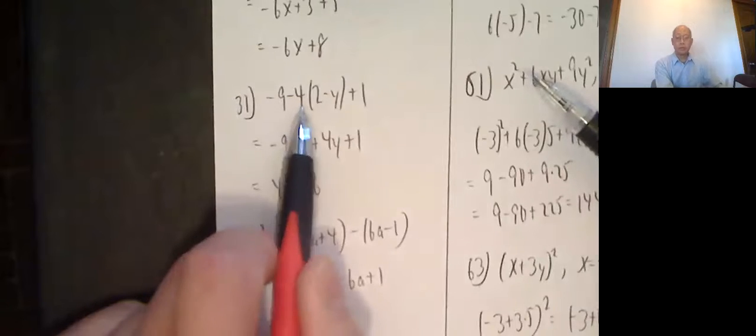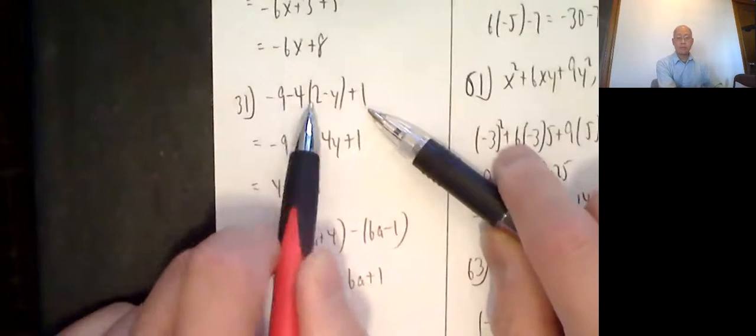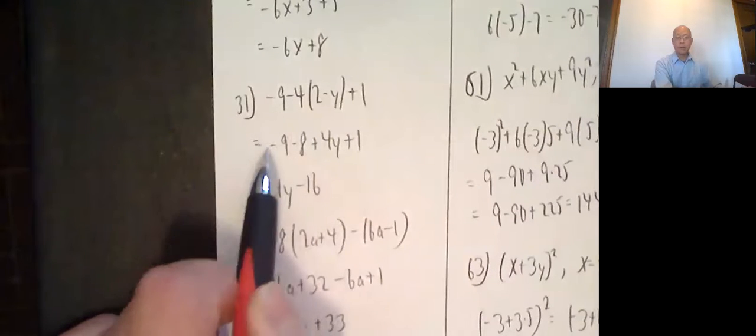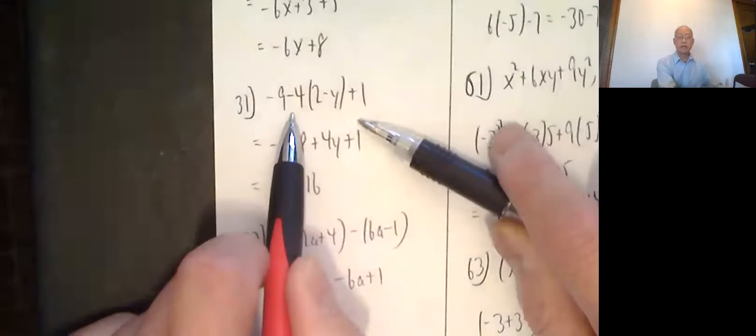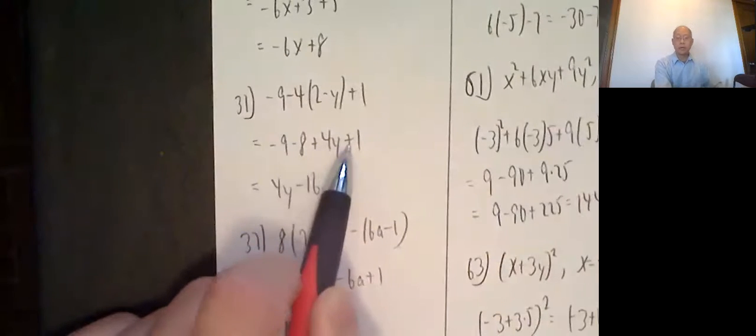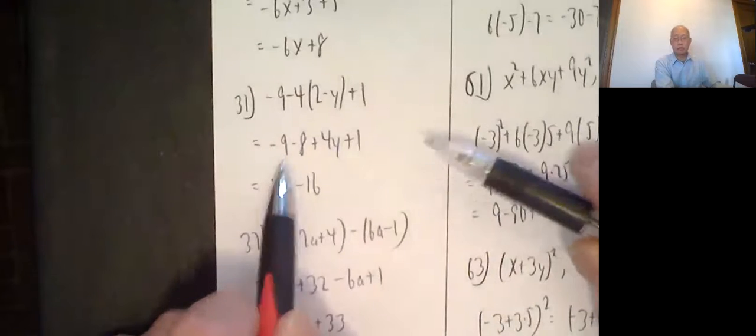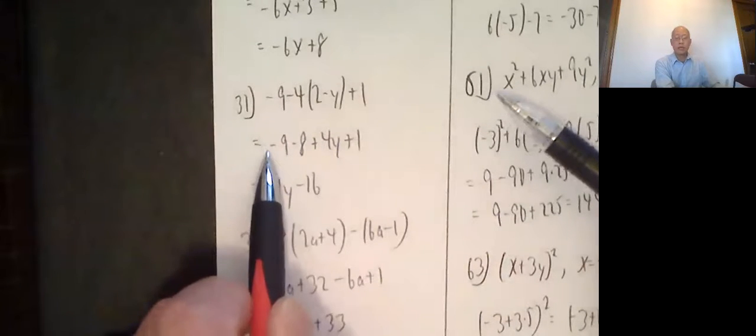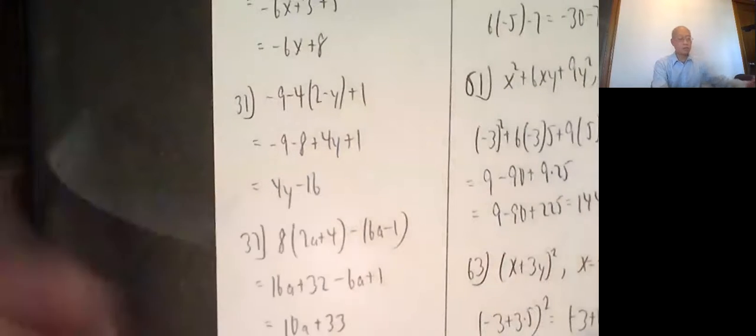31 looks like this. You distribute the negative 4. You don't touch that or that, but the negative 4 gets multiplied by each of these. So leave it on the negative 4, the negative 9. Negative 4 times 2 is negative 8. Negative 4 times a negative y is a positive 4y, then the plus 1. Then I combine the y's with the y's and the numbers with the numbers. There's only one expression, another y, 4y. And then negative 9 minus 8, that's a negative 17, plus 1 is a negative 16.